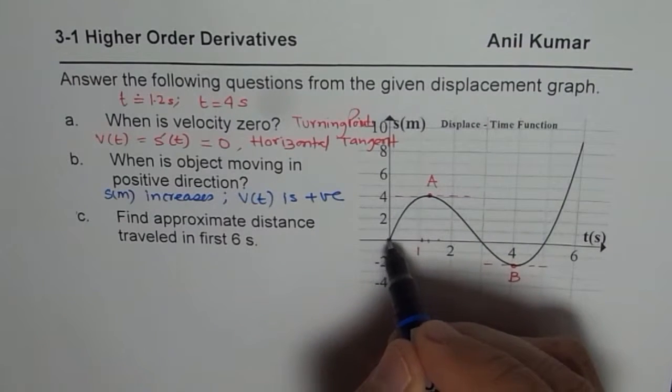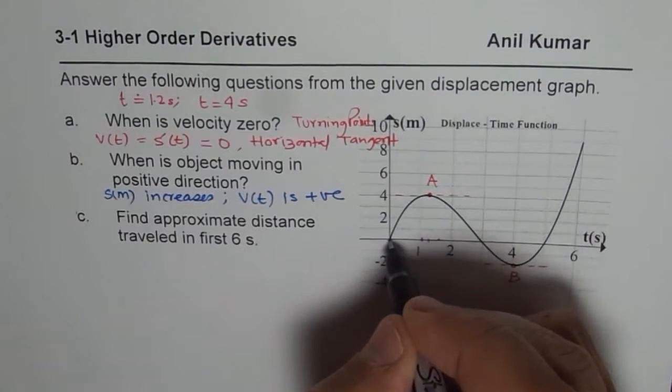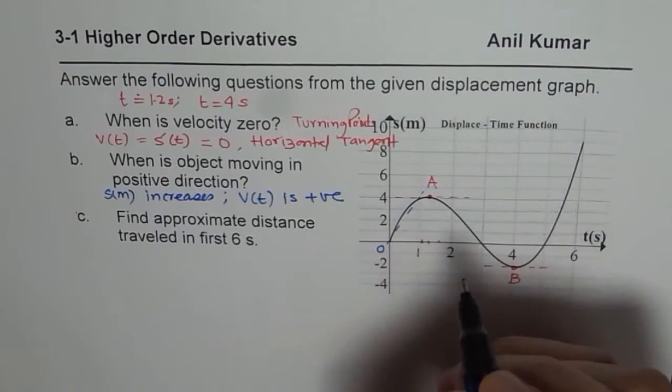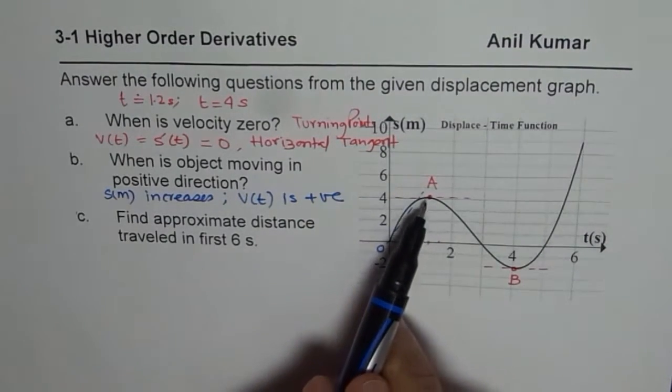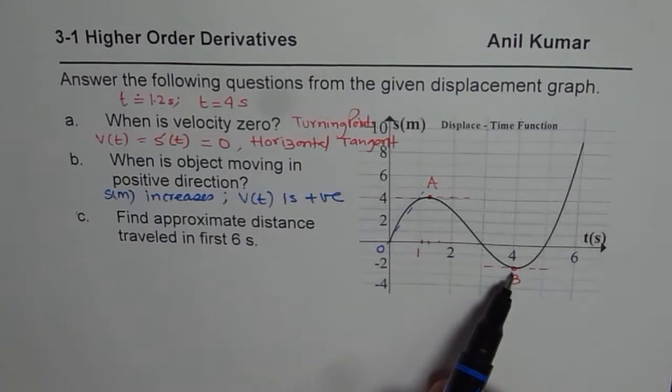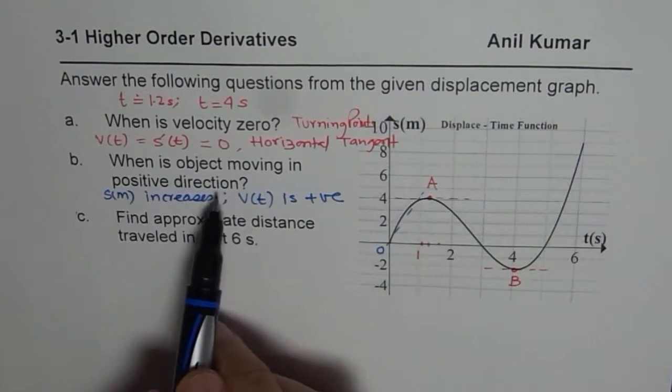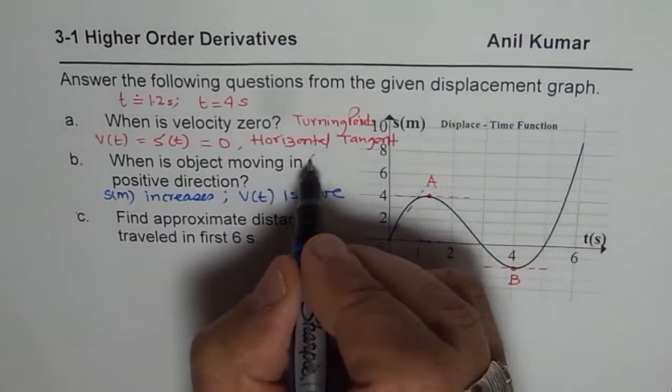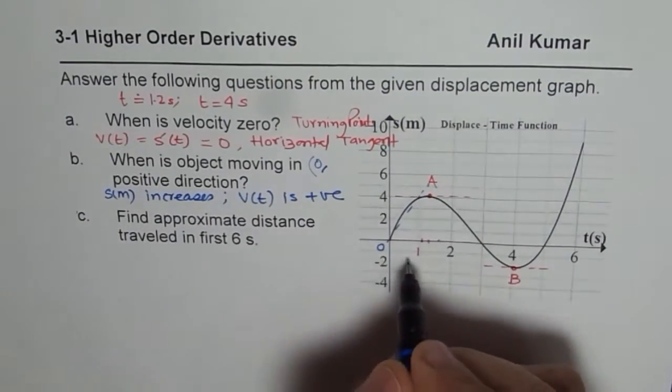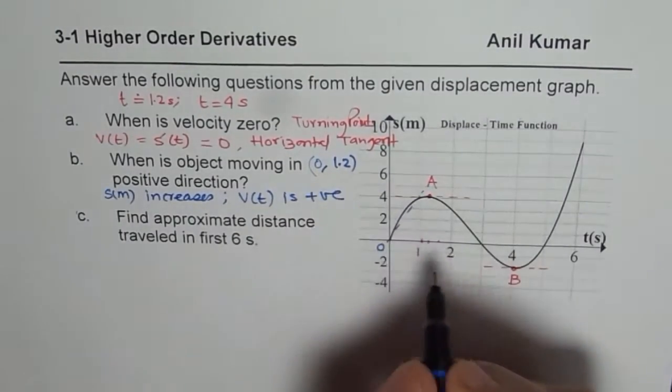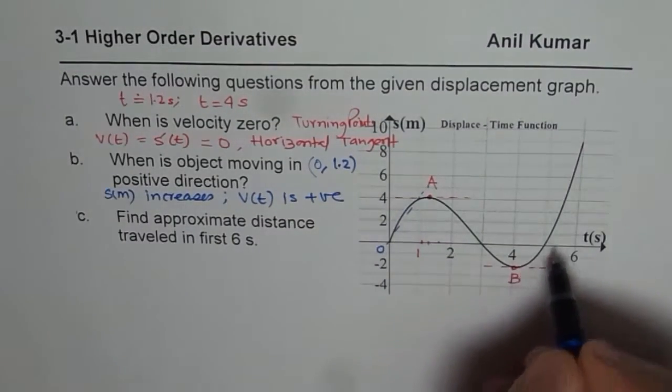So clearly from here from starting from 0 to the maximum we have a positive slope. But between A and B we have negative slope. And therefore we can say object is moving in positive direction when the interval is from 0 to A which I will assume to 1.2. So we will say 1.2. And from B onwards.